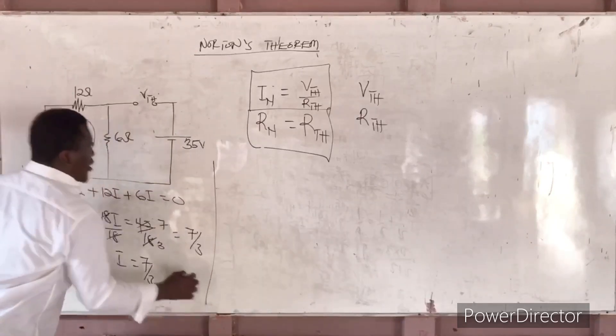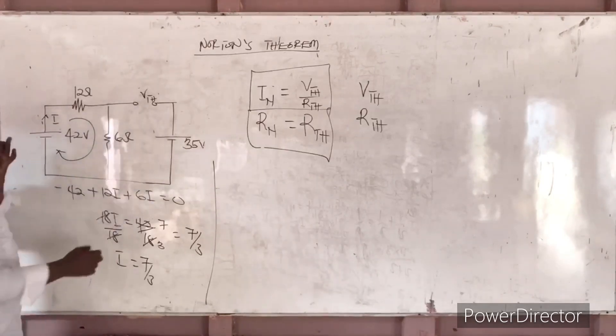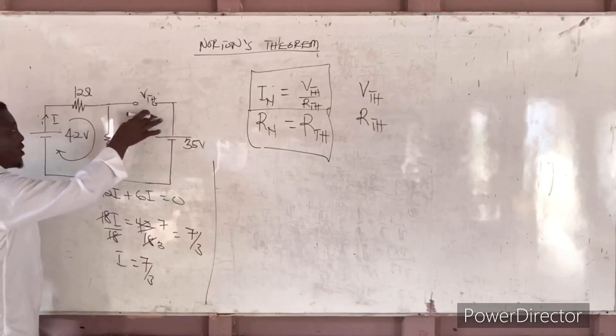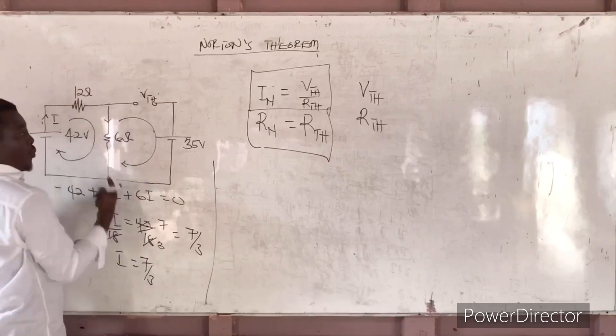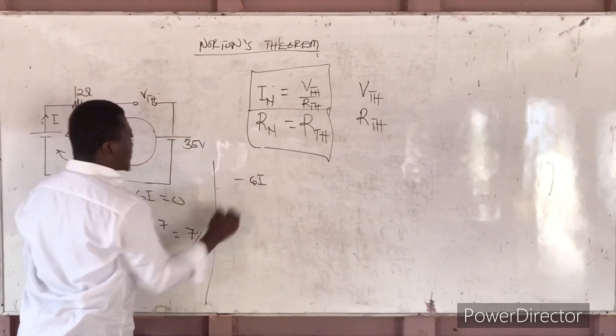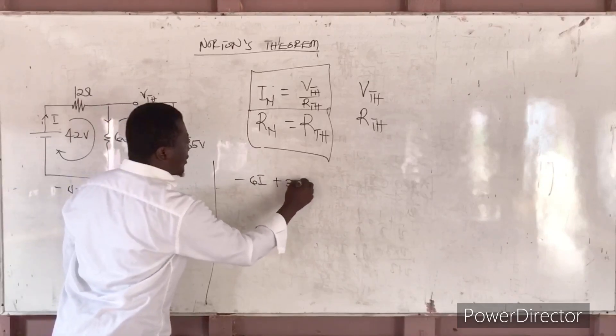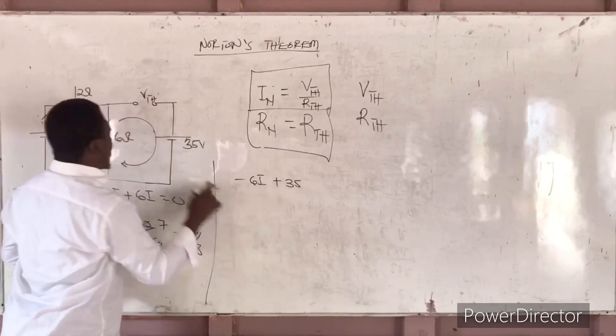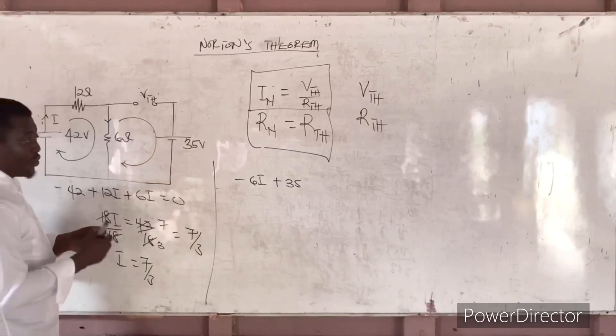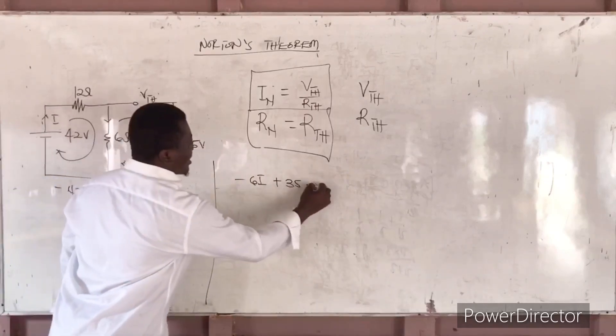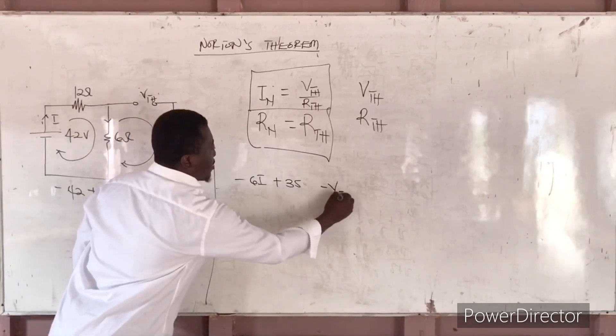So since we have 7 over 3 to be our I, I is equal to 7 over 3. Now we can get Thevenin's voltage by taking this loop. So you treat this as a voltage source. So by treating this as a voltage source, if you take this loop, you see that this one, the current was coming through it this way so it is opposing. So you get minus 6I, then it will touch positive which is plus 35V. Then the VTH, the VTH is non-polar so it can take either minus or plus. It is based on it. But in this case I can say let it be plus VTH.